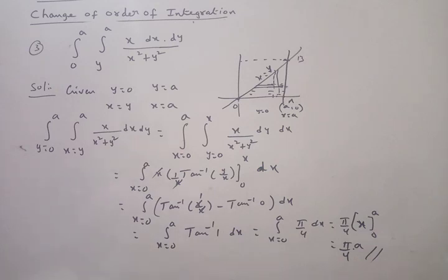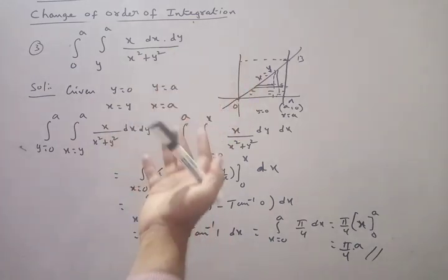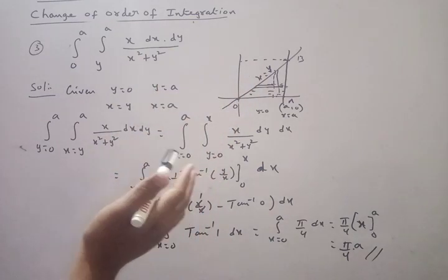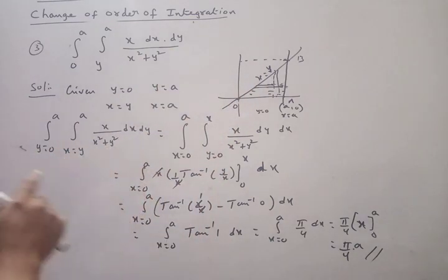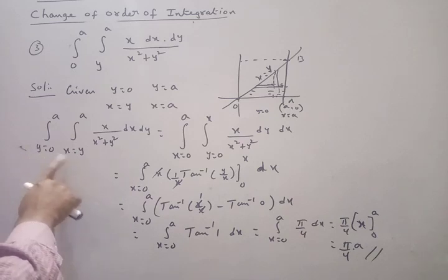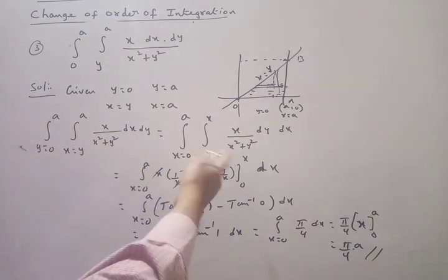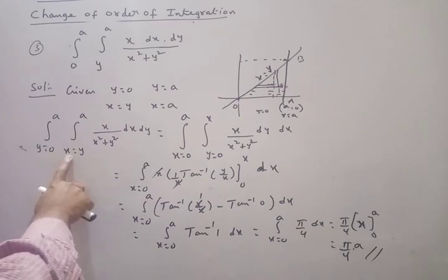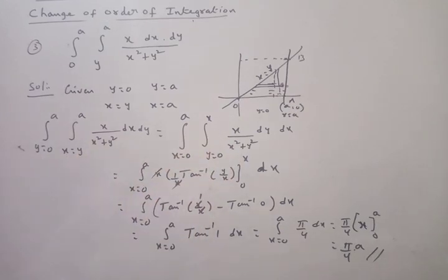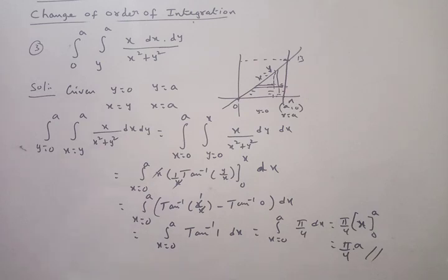Don't be confused with the strip method from textbooks. If you want to take a strip, take a strip; if not, don't. The main concept is: whatever order is given, you have to change it - if Y and X are given, change to X then Y. In the next class we will see change of order of integration with 2-region problems. Practice the problems. Thank you.